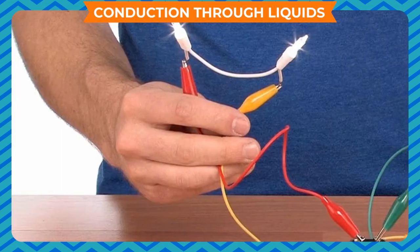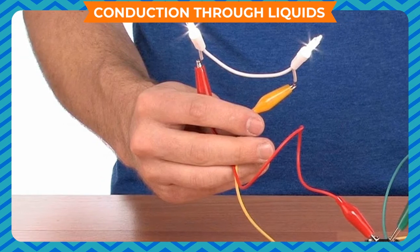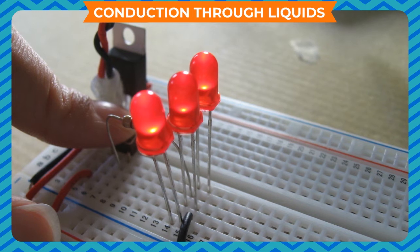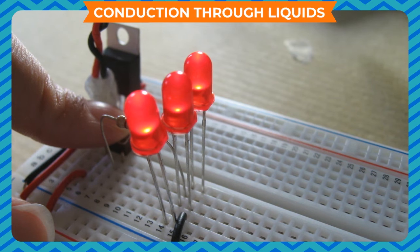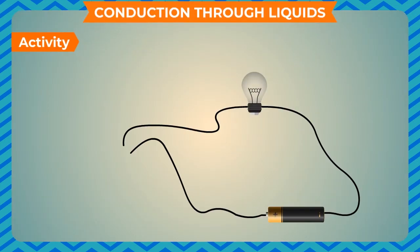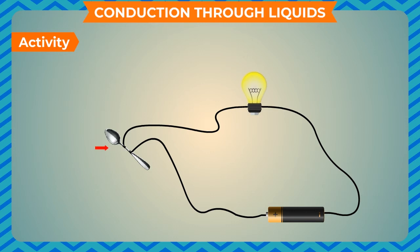An LED has two wires called leads attached to it. One lead is slightly longer than the other. While connecting to a circuit, the shorter lead is connected to the negative terminal of the battery and the longer lead to the positive terminal. It must be ensured that the free ends of the leads do not touch each other. To make a tester, make an electric circuit consisting of a cell and a bulb connected through copper wire. Touch the free ends of the wire together — if the bulb glows, your tester is ready. To test a substance, connect it to the two free ends: if the bulb glows, it is a conductor; if it does not glow, it is an insulator.